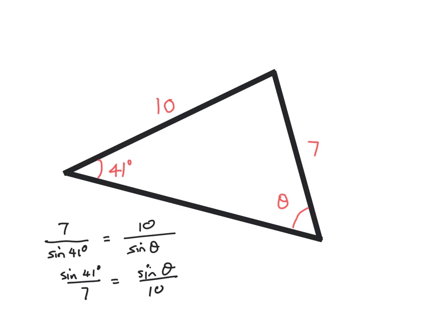That enables us to take the 10 and move it up diagonally, so we get that 10 times sine 41 degrees over 7 equals sine theta.